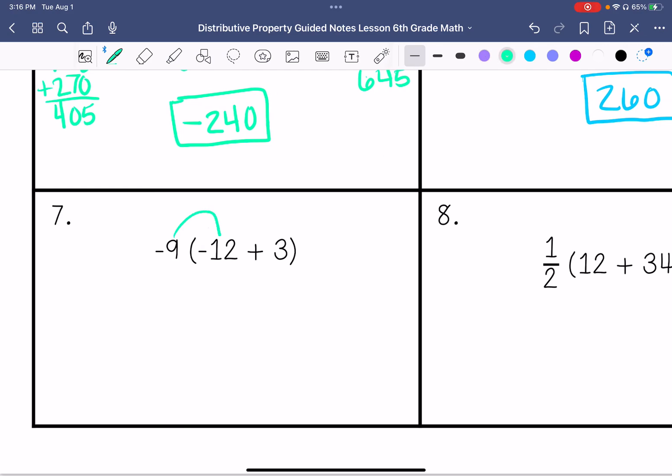Number 7, negative 9 times negative 12 is 108. Negative 9 times 3 is negative 27, so we're going to subtract these because they have different signs. So it is going to be 81.